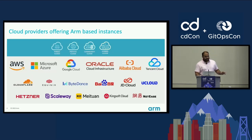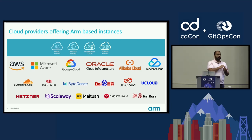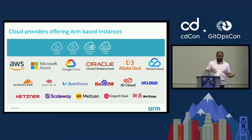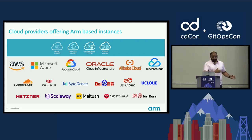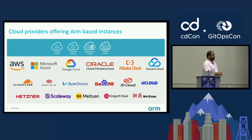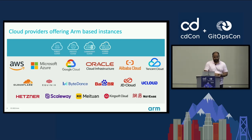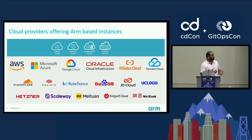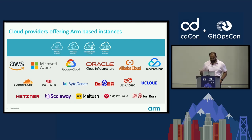These are the cloud providers offering ARM-based instances. They include public clouds like AWS, Azure, GCP, and Oracle, as well as private clouds, community clouds, and hybrid clouds. This is a snapshot of what these clouds offer and what kinds of instances you can expect.